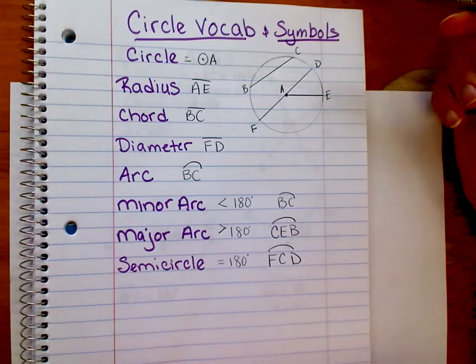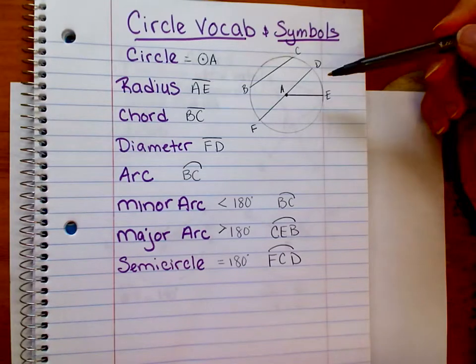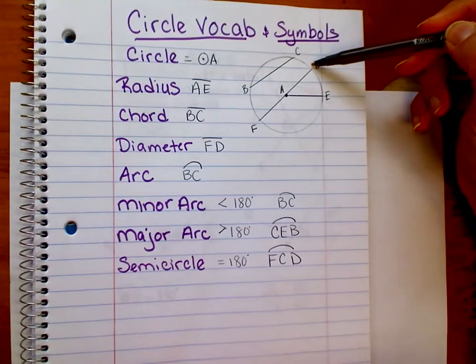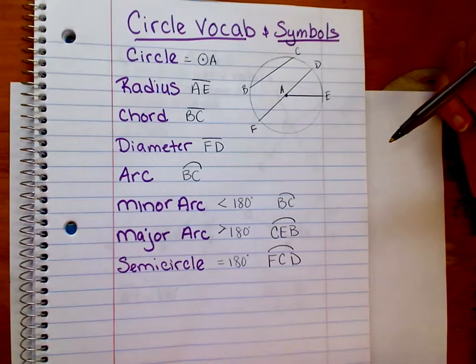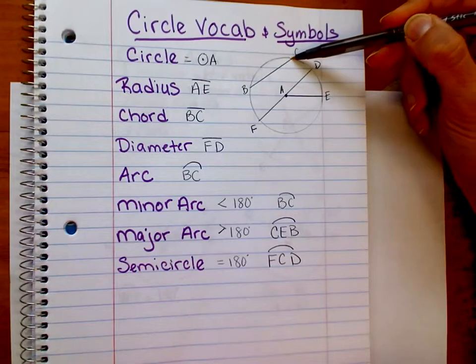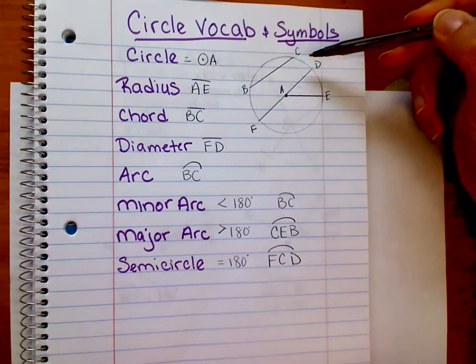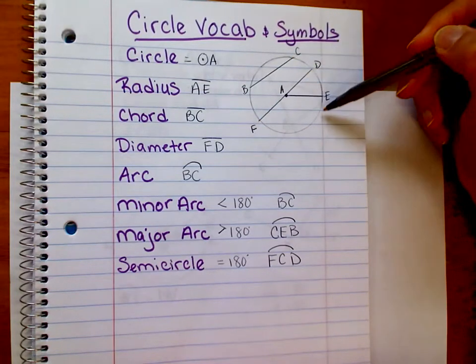Major arcs are greater than 180 degrees. If I started at C, went all the way around the circle, and ended at F, that would be a major arc. I could call that arc CDF or arc CEF.